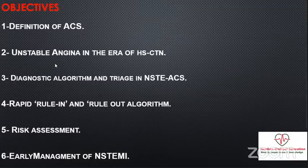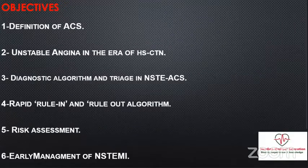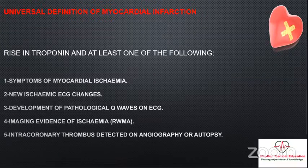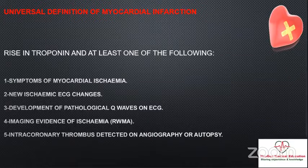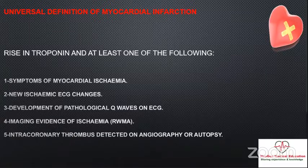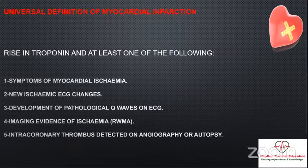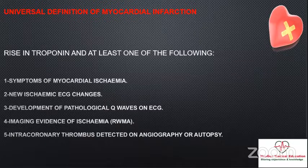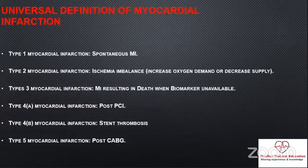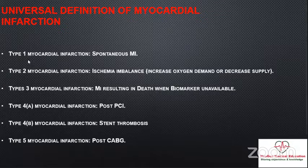Based on this definition, myocardial infarction is also classified by five types. The definition is based on a rise or fall in cardiac troponin with symptoms of myocardial ischemia, new ischemic ECG changes, development of pathological Q waves on ECG or imaging, evidence of ischemia like regional wall motion abnormality, and intracoronary thrombus detected on coronary angiogram. Based on this, we have types 1 through 5 which we encounter in daily activity.